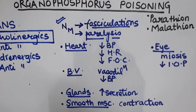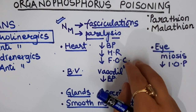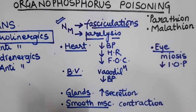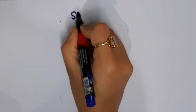For treatment, there are three basic steps: first, eliminate the exposure by moving the person away from the site of organophosphorus compound exposure; second, maintain a patent airway and the patient's breathing; and third, supportive measures. After these, we move to the specific antidote.